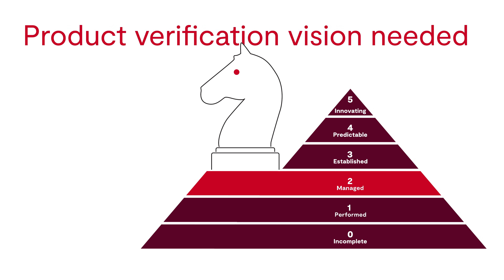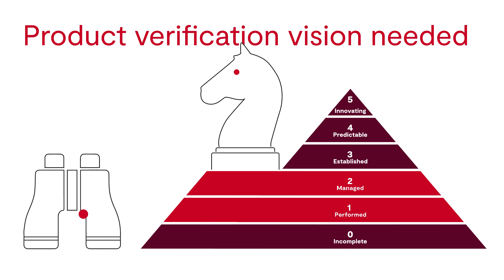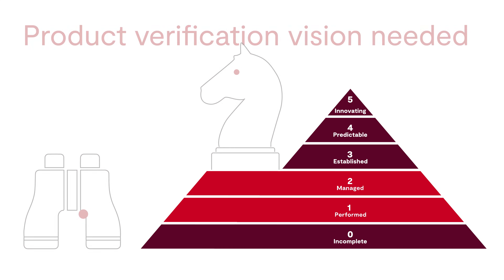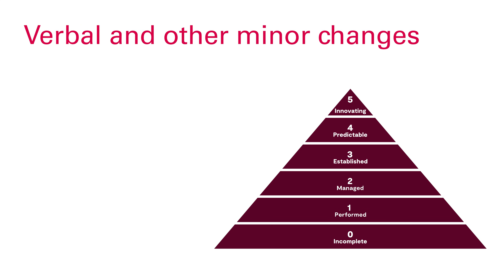Although strategies have been moved to capability level 2, it is important to note that at capability level 1, you still need to have a vision of how to demonstrate that your product has been verified. For example, for the test processes, there are still many changes at the detailed level. These mainly concern the terminology.